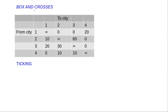The next step is known as box and crosses. Boxing is also known as assignment — we assign zeros by boxing them, and we cross off other zeros. We analyze the rows and find the row in which there is a single zero entry. This is row number 2, so we box that zero — we have done an assignment meaning travel from city 2 to city 4 is now assigned.